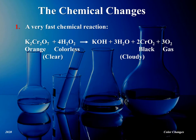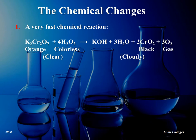This interesting chemical reaction involves three main steps. In the first step, a very fast chemical reaction takes place. The orange solution of potassium dichromate, which has the formula K2Cr2O7, turns black when it reacts with the hydrogen peroxide. The black color is due to the formation of chromium dioxide, CrO2, which is not soluble in water, so the solution looks cloudy.